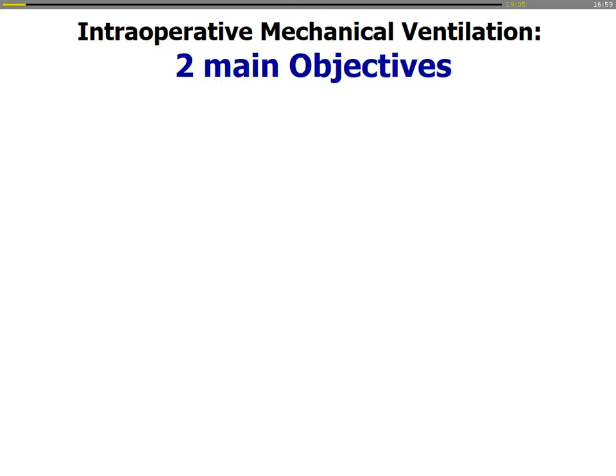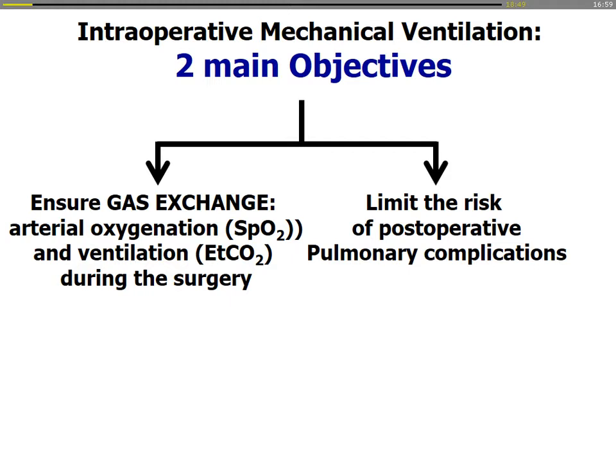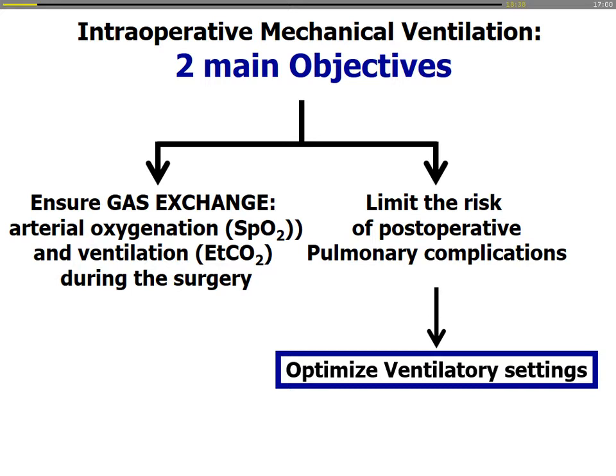Intraoperative mechanical ventilation has two main objectives. First, to ensure gas exchange — meaning arterial oxygenation and ventilation during surgery under general anesthesia. Second, we should absolutely convince everybody that we should also limit the risk of postoperative pulmonary complications by modifying the ventilator settings. By optimizing ventilatory settings, we can impact patient outcomes.